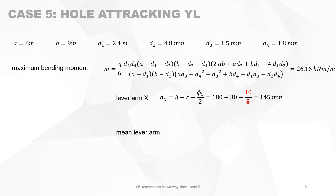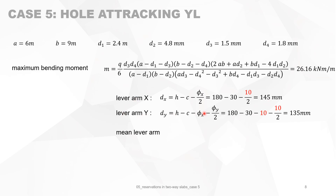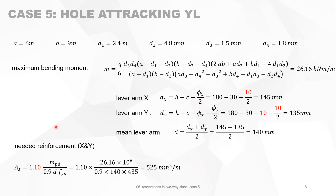We calculate the lever arm in the x-direction, which is the total depth minus the cover minus the center of gravity of the reinforcement, assuming one layer of reinforcement. Based on the depth and bending moment, we estimate the bar diameter will be 10 mm. The lever arm is 145 mm in the x-direction and 135 mm in the y-direction (second layer), giving a mean lever arm of 140 mm. The required reinforcement, augmented by 10% for the upper bound method, is 525 mm²/m, roughly a diameter 10 bar every 150 mm.